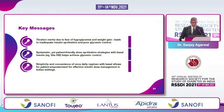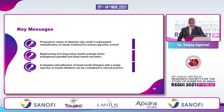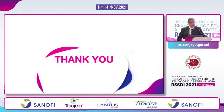Key messages: Titration inertia due to fear of hypoglycemia and weight gain leads to inadequate insulin up-titration and poor glycemic control. Systematic yet patient-friendly dose up-titration strategies with basal insulin help achieve glycemic control. Simplicity and convenience of a once-daily regimen empowers patients for effective insulin management in Indian settings. The progressive nature of diabetes may require subsequent intensification of treatment, and a stepwise intensification of basal insulin glargine with a single injection of insulin glulisine can be considered in clinical practice. Thank you.